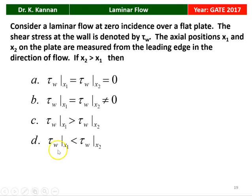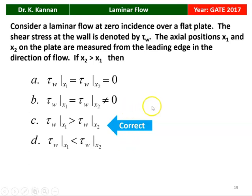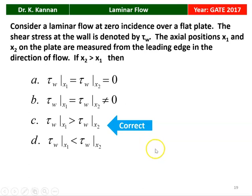The correct answer is: X1 is the position just near the beginning of the plate and X2 is just farther away. The wall shear stress decreases as the distance increases from the leading edge. So the answer is: wall shear stress at X1, which is nearer to the beginning, is greater than wall shear stress at X2, which is farther away from the leading edge.